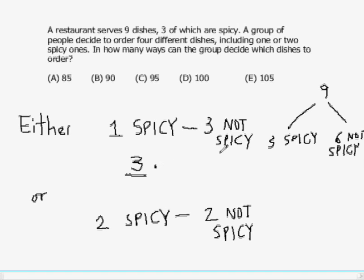And then we have to order three not spicy dishes. Now there are six not spicy dishes to choose from. How many ways can we choose three of these six not spicy dishes? Simply six choose three. Now, if you remember the formula, can anybody calculate six choose three for me?